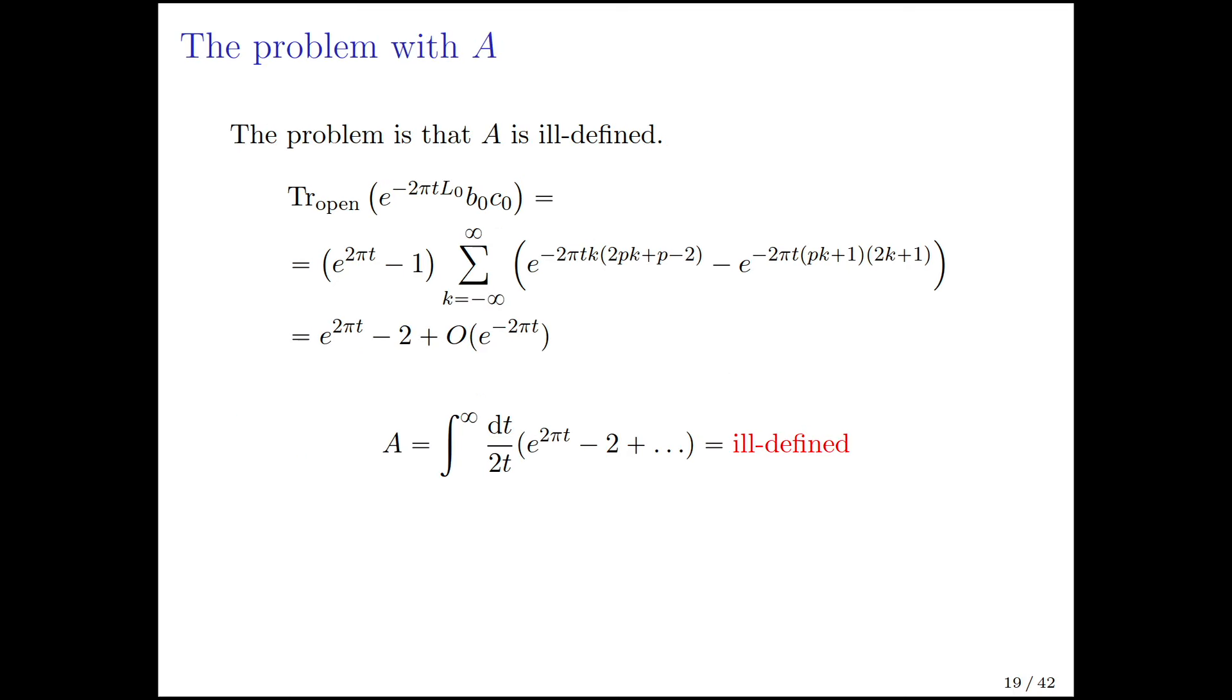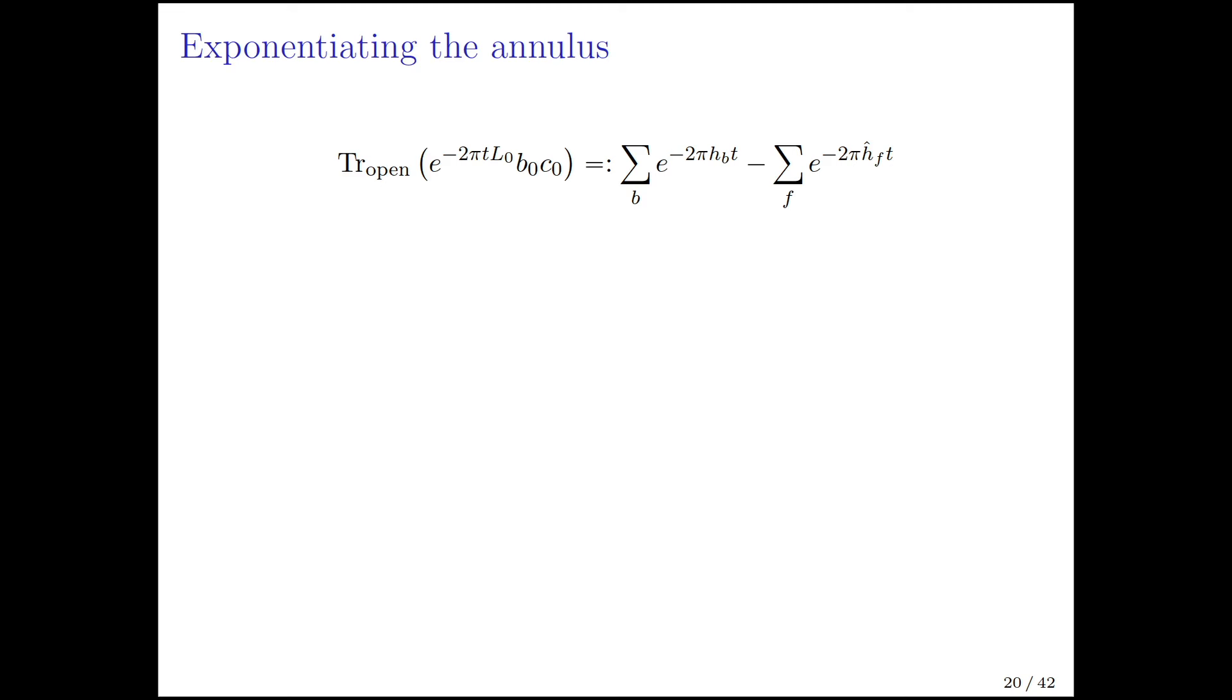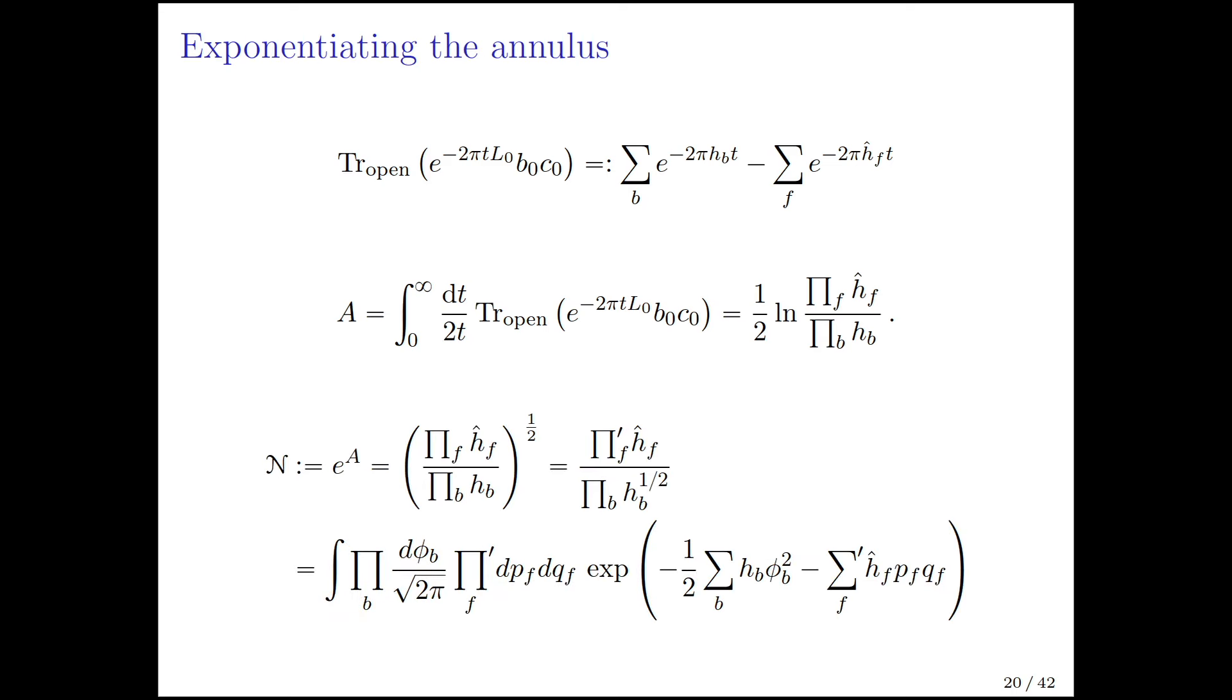The string annulus A is a moduli space integral over this t parameter in the trace in the open string Hilbert space of this operator. You put together the known bootstrap answers and you get this infinite sum with some plus and minus signs. There are plus and minus signs because the BC ghosts are Grassmann odd, and there's a B0, C0 sitting in the trace. You need those because there are ghost zero modes on the cylinder. The problem is simply that this A is ill-defined. If you look at the t expansion at large t, there's one term that's e to the 2 pi t with a negative 2, and this A is ill-defined.